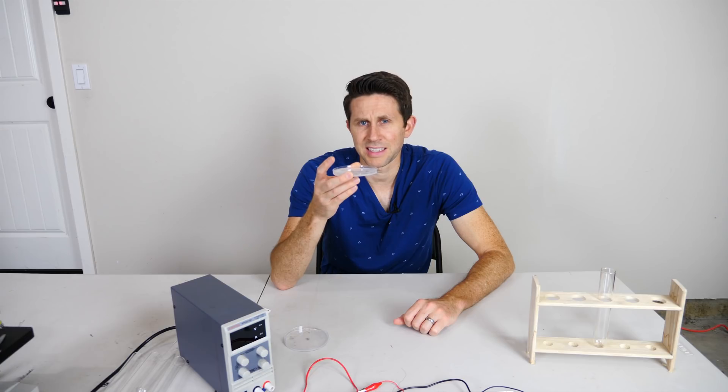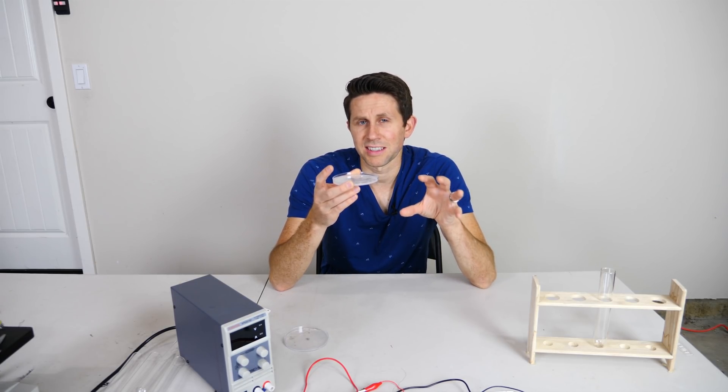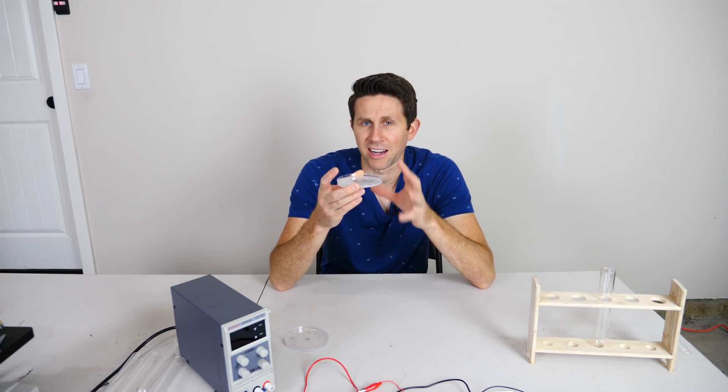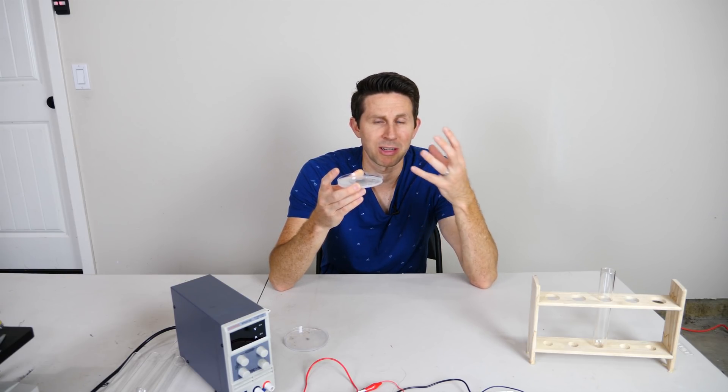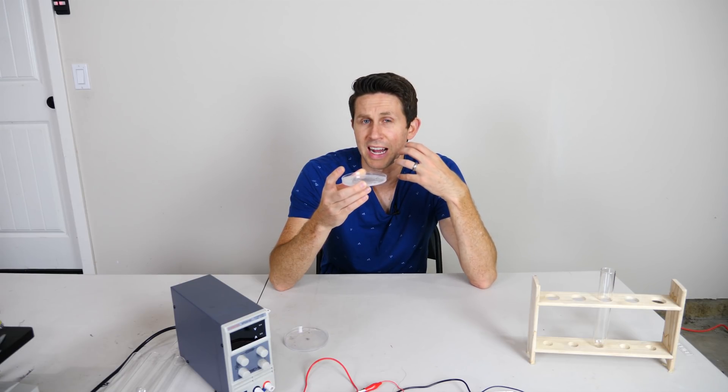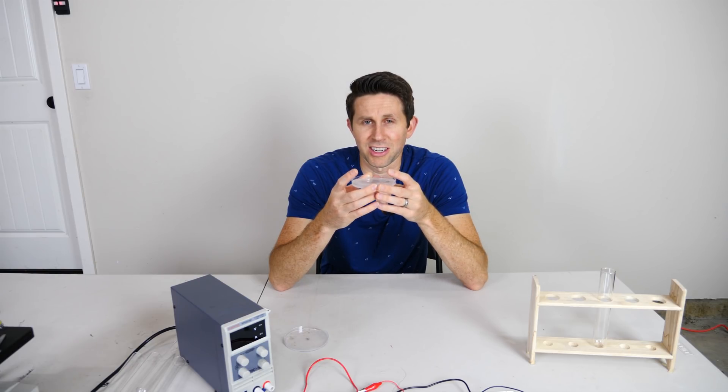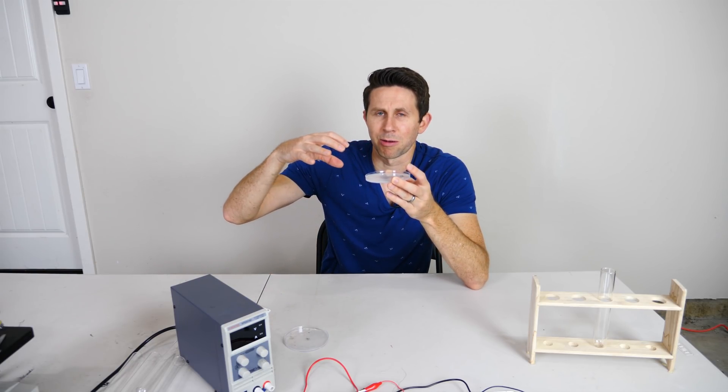I have here a solution that has tin ions in it. What I'm going to do is add electrons to those tin ions so that they'll become metallic tin instead of ionic tin. Basically what will happen is they'll start forming metallic elemental tin, and as I add more and more electrons, that tin will grow and it will branch out.